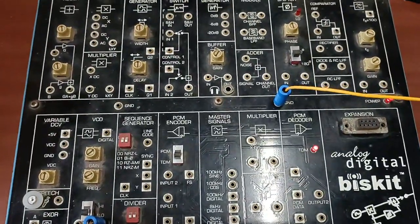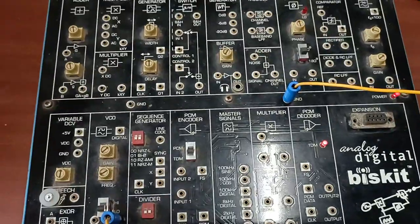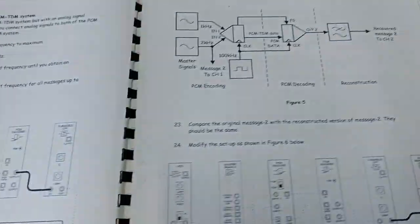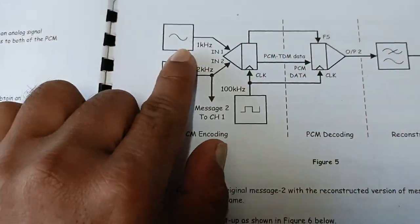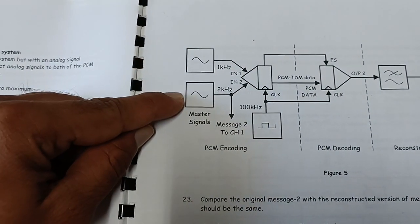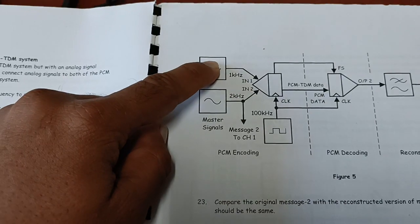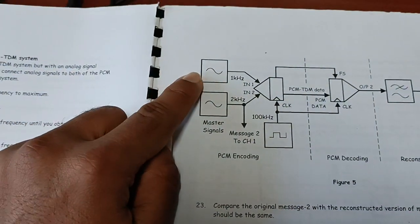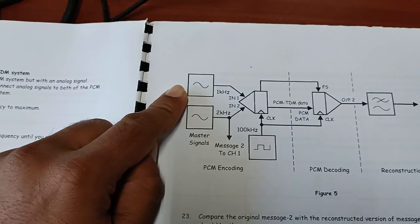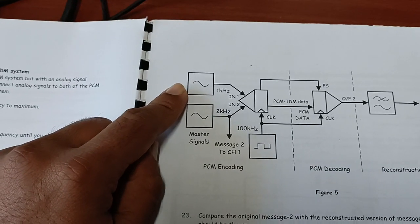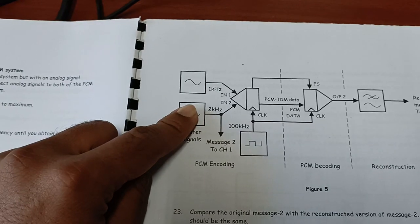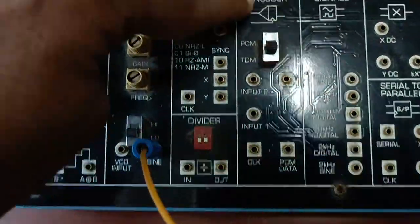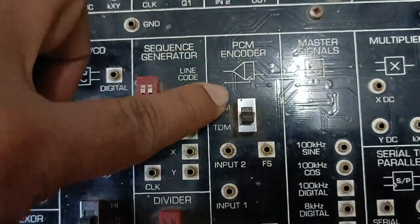In this lab we are going to see multiplexing and demultiplexing. Looking at the block diagram of this experiment, there are two different signals: a one kilohertz sine wave and a two kilohertz sine wave. We can combine more than two, but in this kit — the Monocom Trainer 101 — only two sine wave inputs are available. Here you can see the PCM encoder block, which also functions as a TDM encoder.